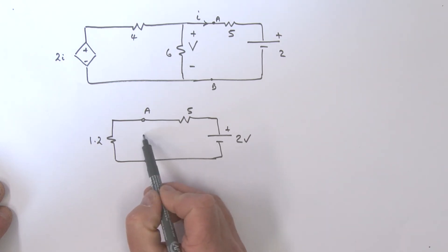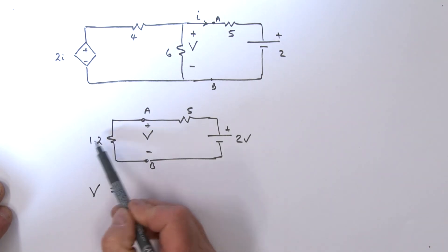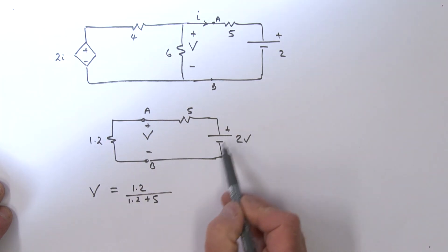What are we trying to find? We're trying to find that voltage V. It's a very simple circuit now. That voltage V at those terminals there is equal to 1.2 divided by the sum of the two, which is 1.2 plus 5, multiplied by that 2 volts. If we work that out, that comes out to be, with a bit of rounding, 0.387 volts.